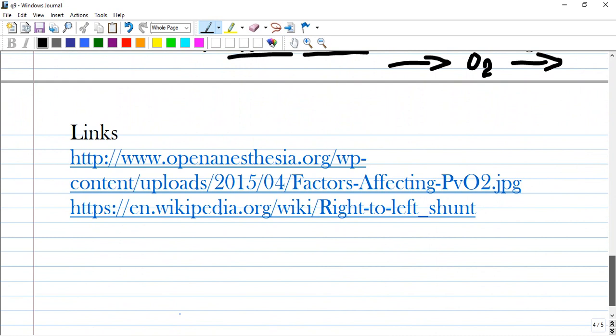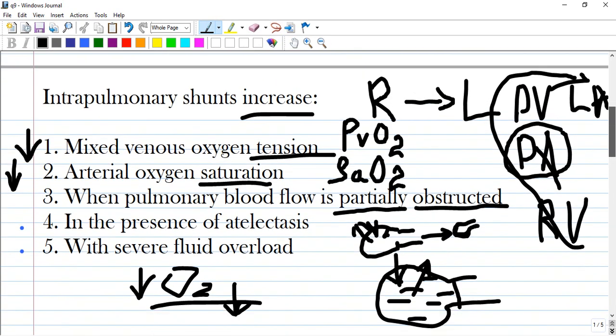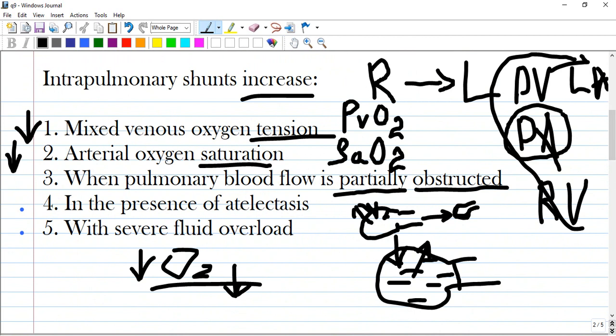Here are many links you can access by yourself. Going back once again to the condition of the question. Intrapulmonary shunt increases in presence of atelectasis and severe fluid overload. So, other conditions are incorrect and explained why. Thank you for your watching.